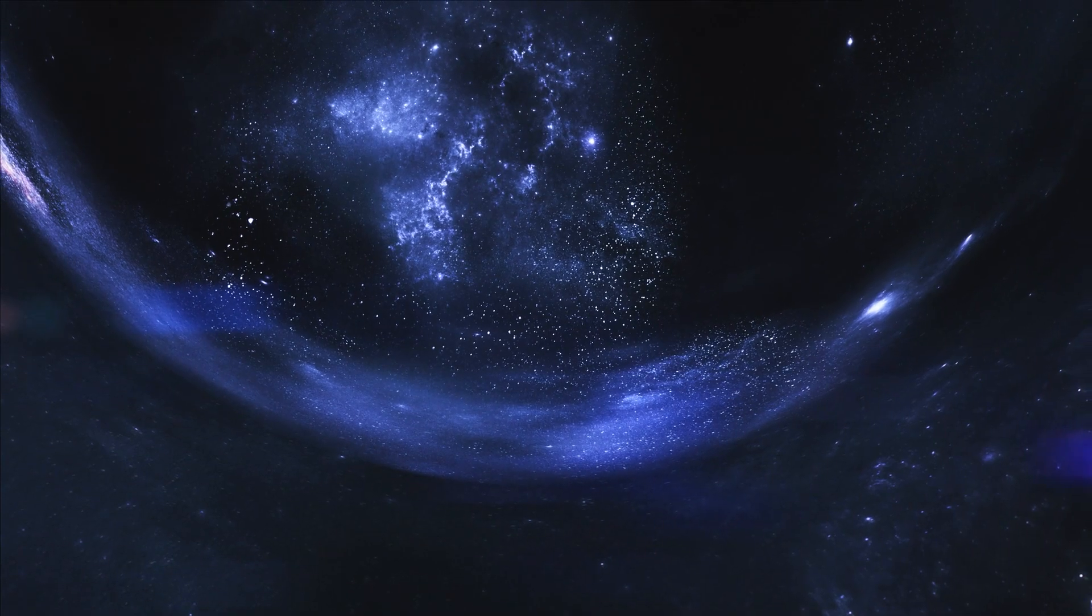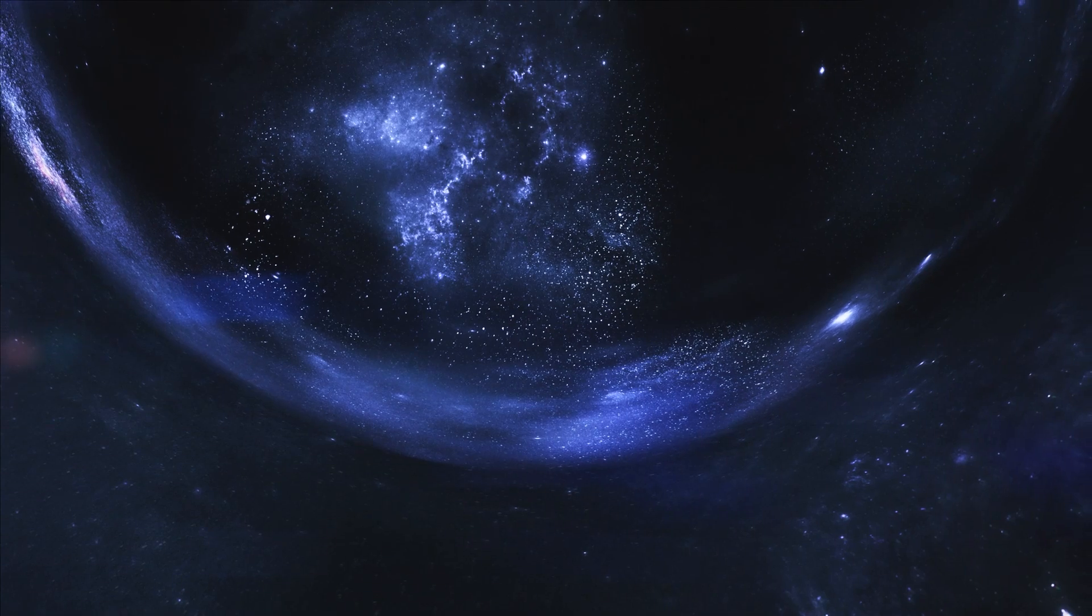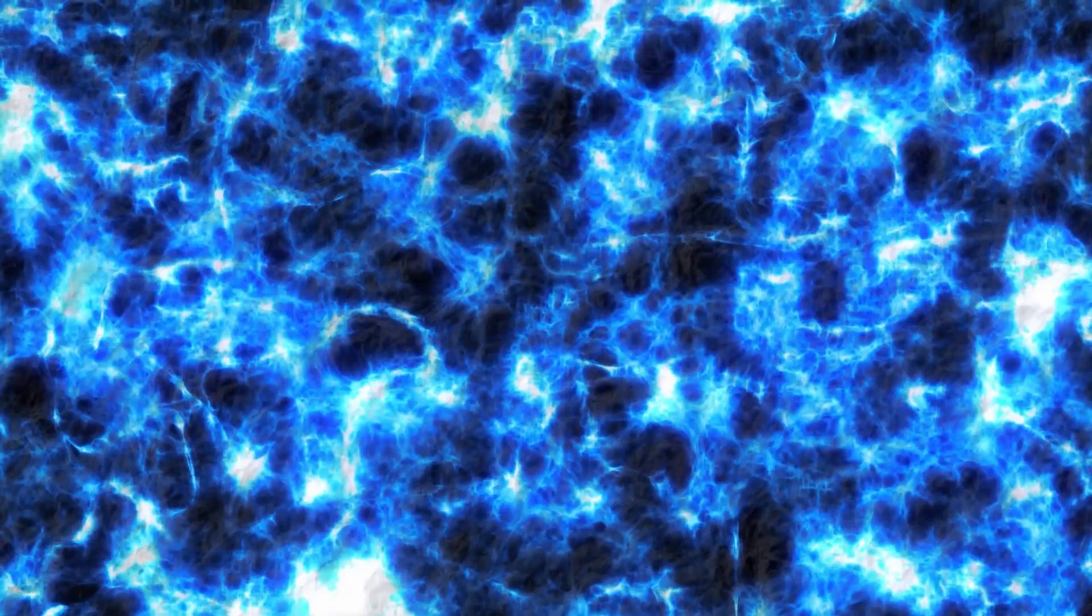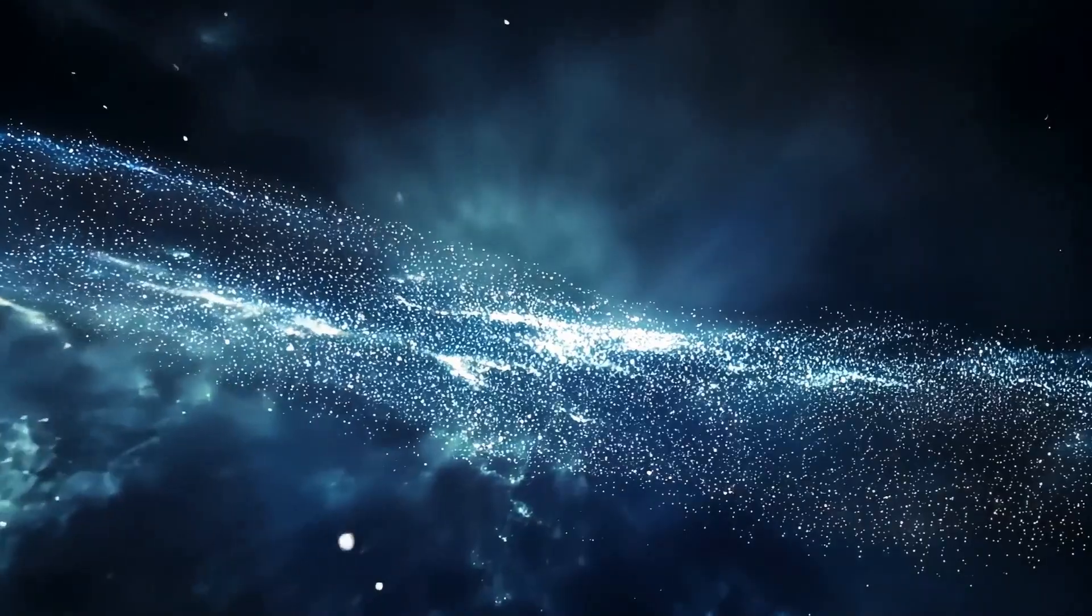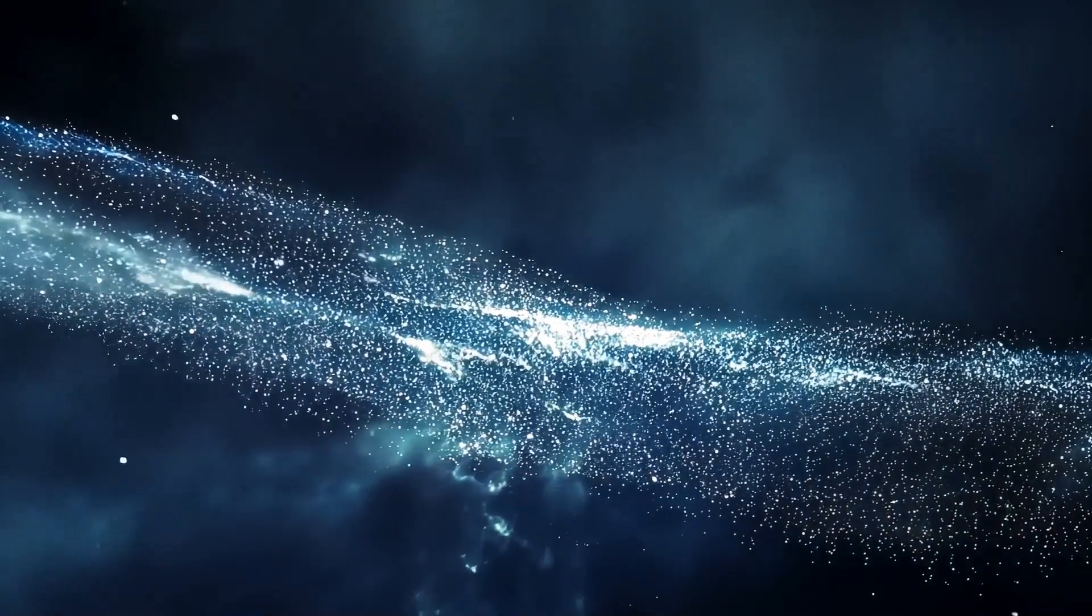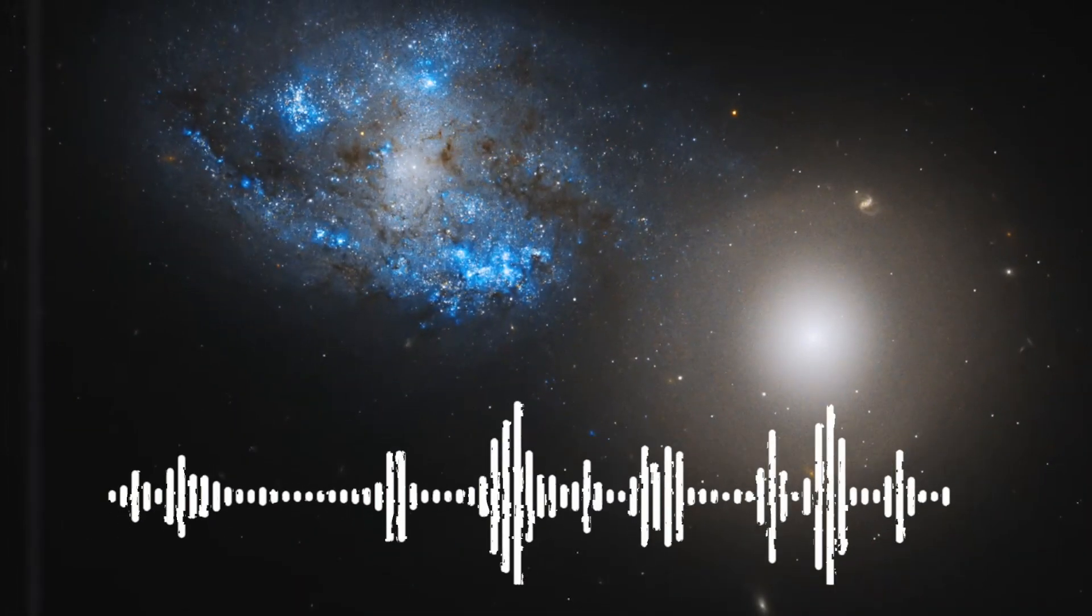ARP 140. This sound representation of ARP 140 shows two galaxies interacting. On the left is NGC 275, a barred spiral galaxy, and on the right is NGC 274, a lenticular galaxy.